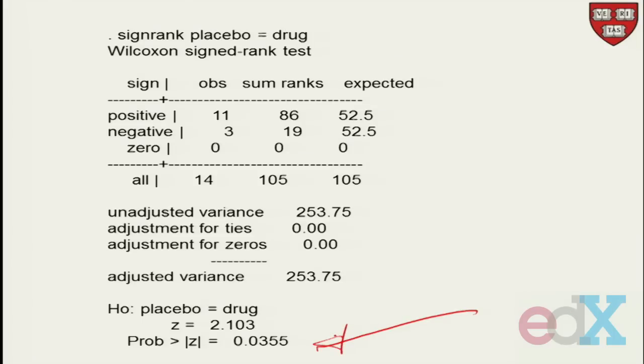So that's the Wilcoxon signed rank test, which is the same as what we could do on one sample. The one I showed you here was on the two-sample correlated, or dependent, situations.